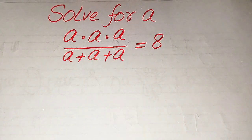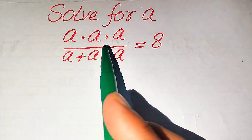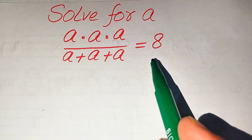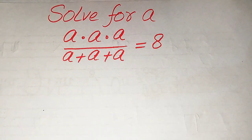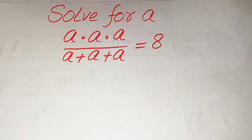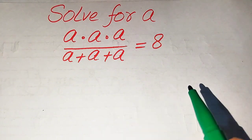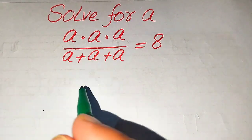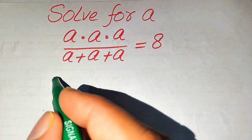How to solve this problem: for the values of a, if we have a multiplied by a multiplied by a, divided by a plus a plus a, equals 8. We solve this for all values of a. First we find all the roots of this equation, and at the end we verify which roots are solutions and which are extraneous roots.